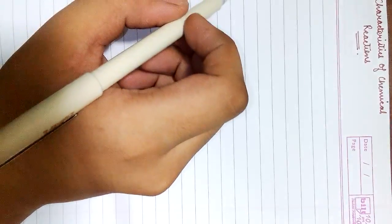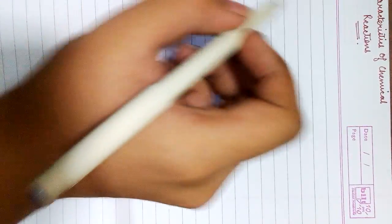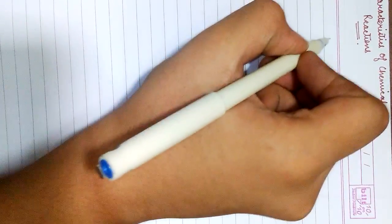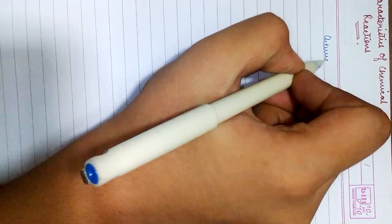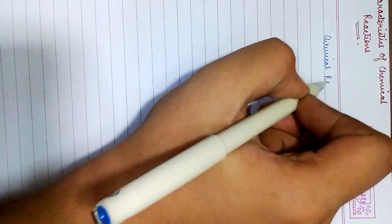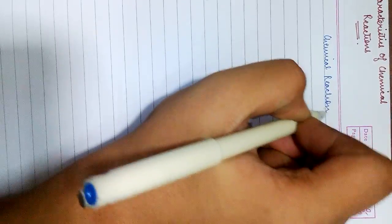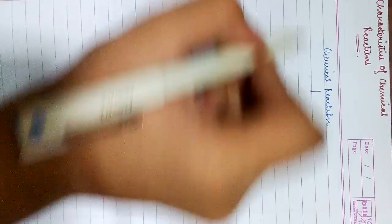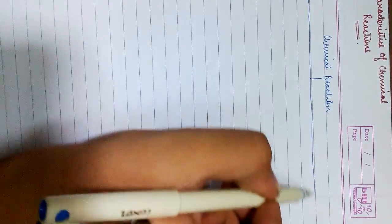So let's start. Characteristics of chemical reactions. We have five major points to know that a chemical reaction has taken place. We get to know that chemical reaction has taken place by checking out whether either of these five things has happened or not.